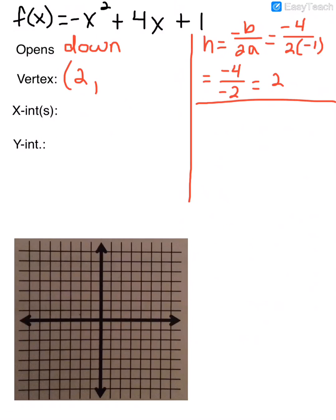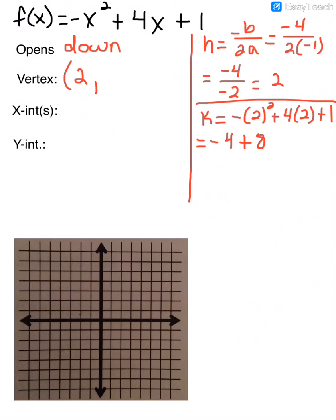Now to find k, I take 2 and plug it into the function. So k would be: negative, I'll plug in 2 squared, plus 4 times 2, plus 1. The negative is not being squared — only the 2. So that's negative 4 plus 8 plus 1. Negative 4 plus 8 is positive 4, and 4 plus 1 is 5. So my k is 5, and that gives me a vertex of 2, 5.